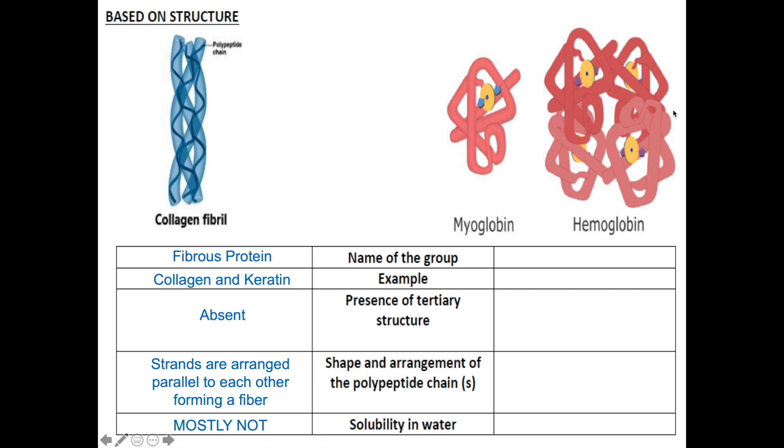Now the second group will fold into a compact 3D structure forming a globule. Hence, they are grouped within a globular protein group. The example includes hemoglobin and myoglobin. Since they form globule, they will have tertiary structure and some can even have complex quaternary level structure.